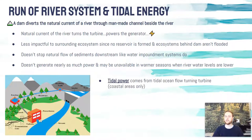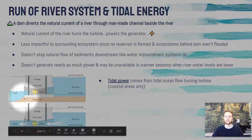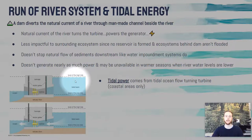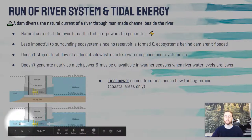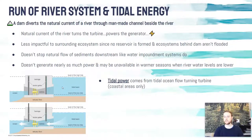We also have tidal energy, where ocean tides, which move in and out predictably each day, spin a turbine underwater to generate electricity. When the ocean is at high tide, water accumulates behind a sort of dam, and when the tide flows back out, it passes the turbine and spins it — and vice versa when the tide moves in. One limitation is that it's only available in coastal areas very close to the ocean, so it's not an energy solution that can work for everyone.